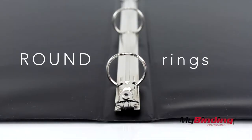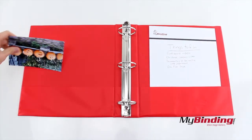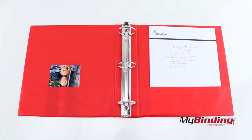The rings on these binders are round. There is a pocket on the inside of both covers, perfect to fit 8.5 by 11 inch paper.